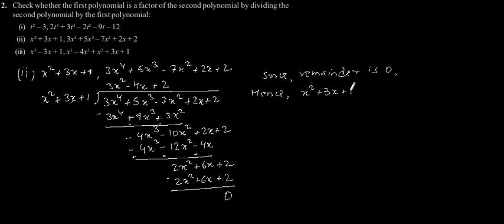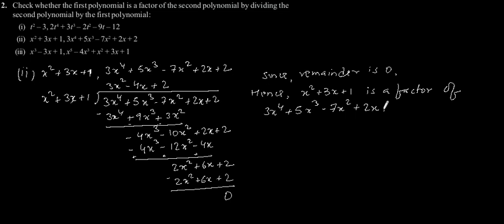By subtracting this we will get remainder as 0. Since the remainder is 0, hence x squared plus 3x plus 1 is a factor of 3x⁴ plus 5x³ minus 7x² plus 2x plus 2. Now the third problem: x cubed minus 3x plus 1, and x to the power 5 minus 4x cubed plus x squared plus 3x plus 1. Let's find out whether the first polynomial is a factor of the second polynomial.